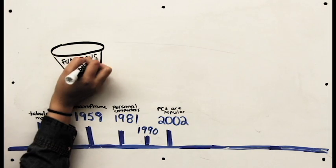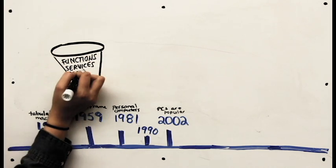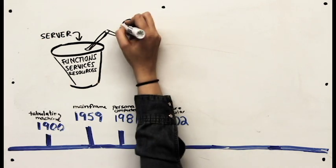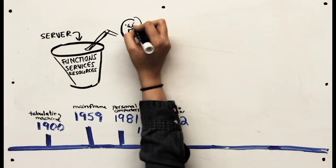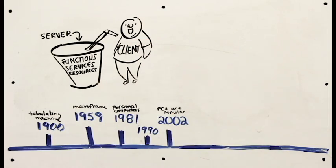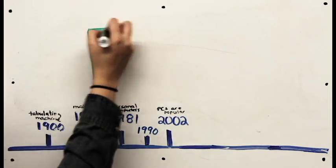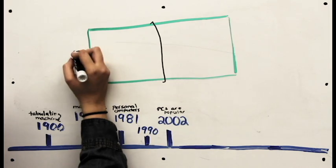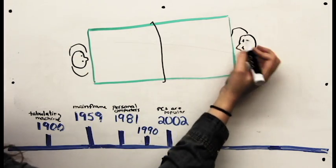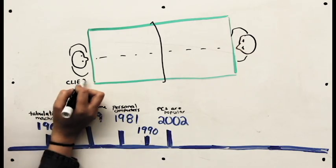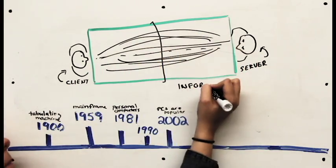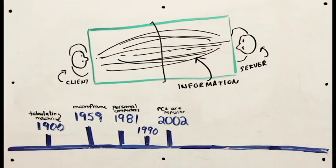The client server model operates so that multiple individual PCs can connect to a central server. Servers hold multiple functions, services, and resources that the PCs can tap into at any point and utilize. Think of it like a ping-pong game. Bytes of information are flying back and forth between the client, for example the internet, and the server, your computer. If the internet requests a file from your computer, your computer retrieves it and serves it back to the internet.